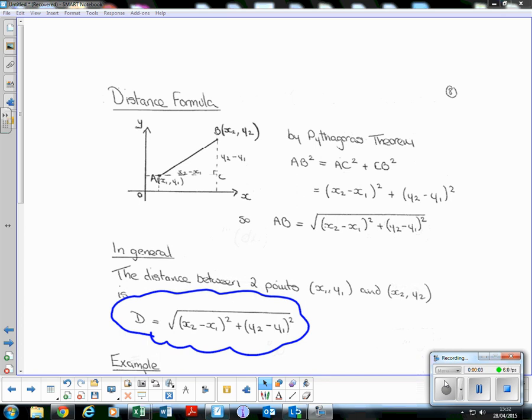SQA Higher Math, Straight Line topic, Lesson 11. We're going to look at the distance formula. The distance formula is basically just Pythagoras' theorem applied to coordinates. Having a look at the diagram here, we have triangle ABC which